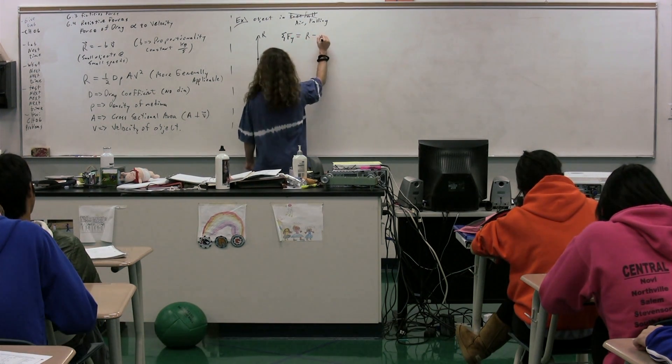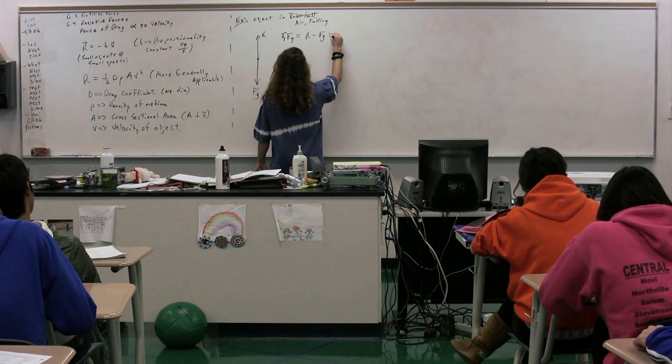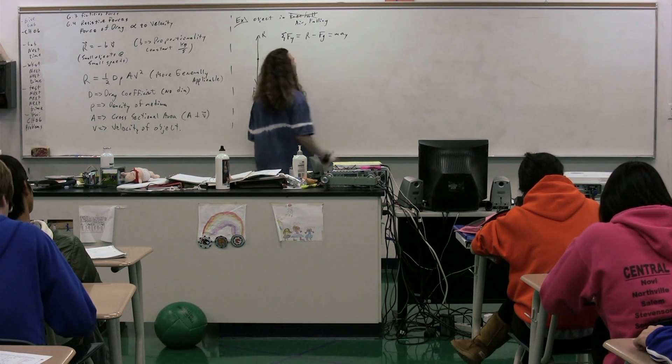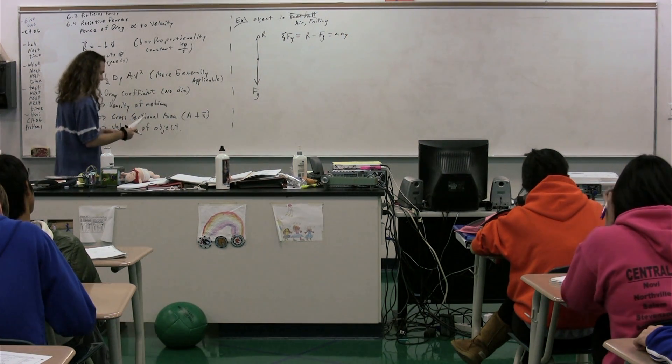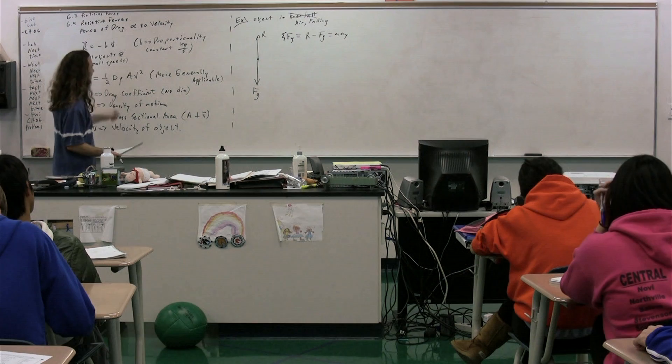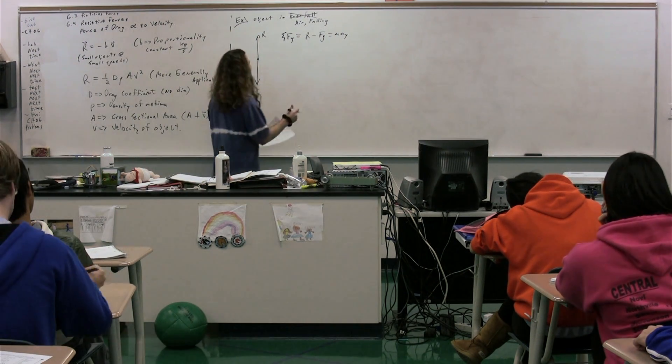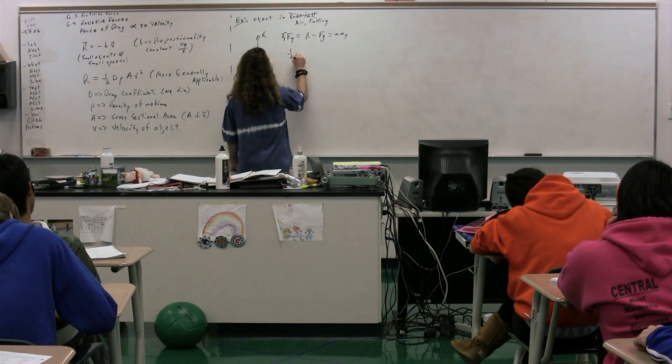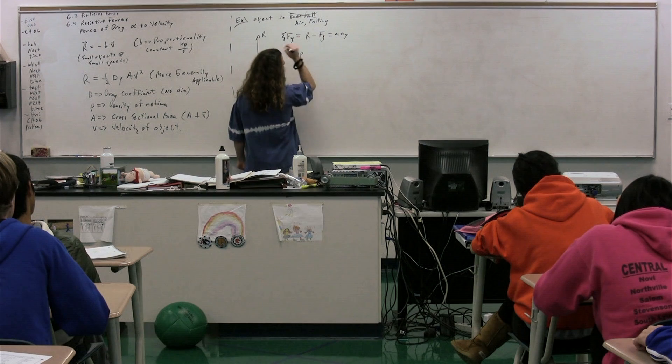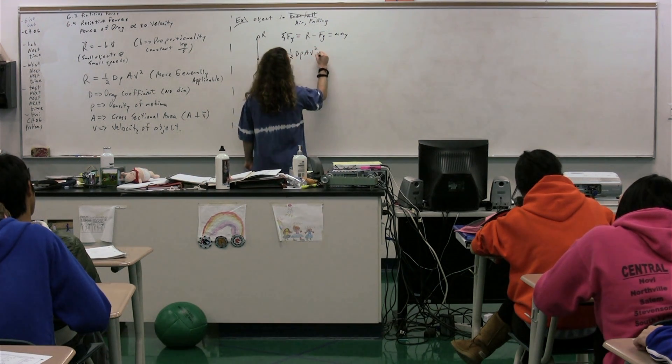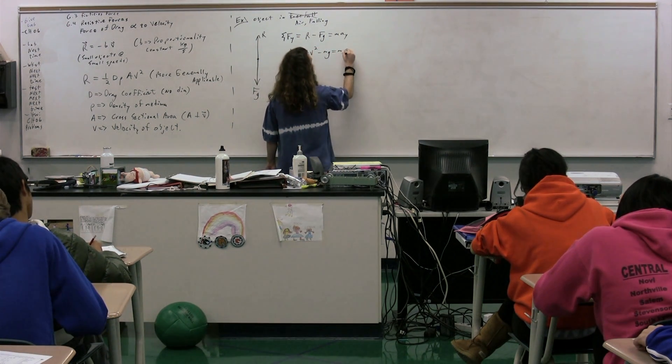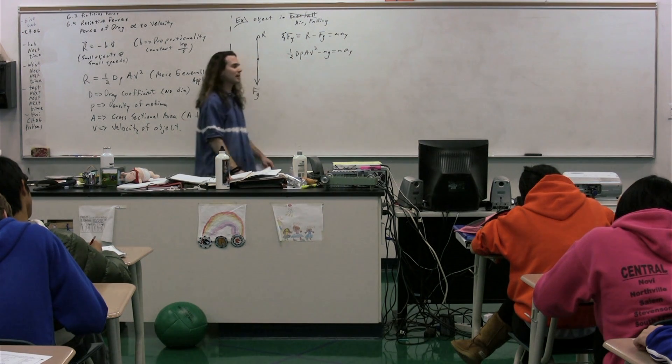So, let's sum the forces in the Y direction. We get the resistive force minus the force of gravity. That's equal to mass times the acceleration in the Y direction. This time we're going to define it using one half of the drag coefficient. So, we have one half times the drag coefficient times the density of the medium times the cross-sectional area times the velocity squared minus mass times the acceleration due to gravity equals mass times the acceleration in the Y direction.